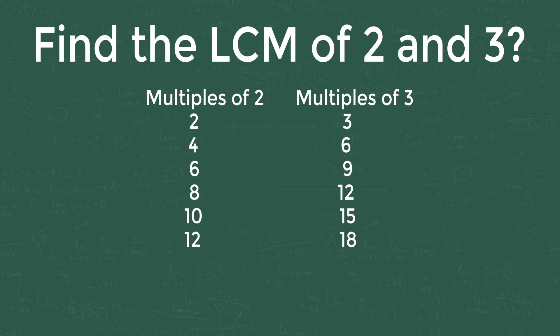As per LCM definition, six is the least number which is exactly divisible by two and three. So, LCM of two and three is six.